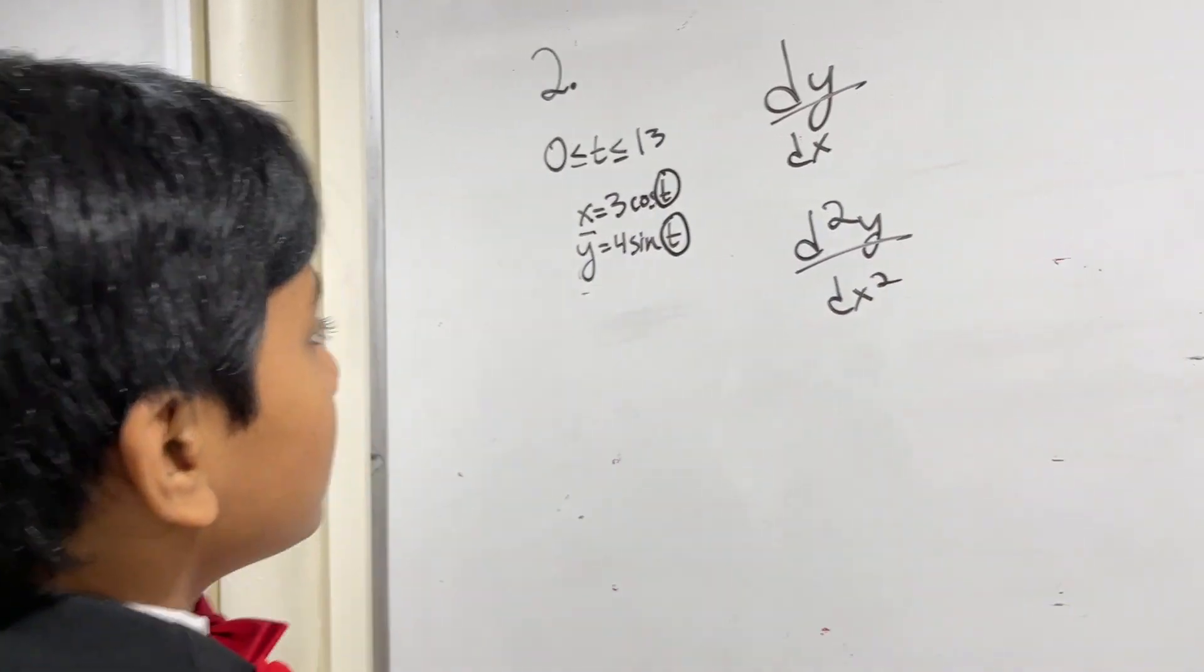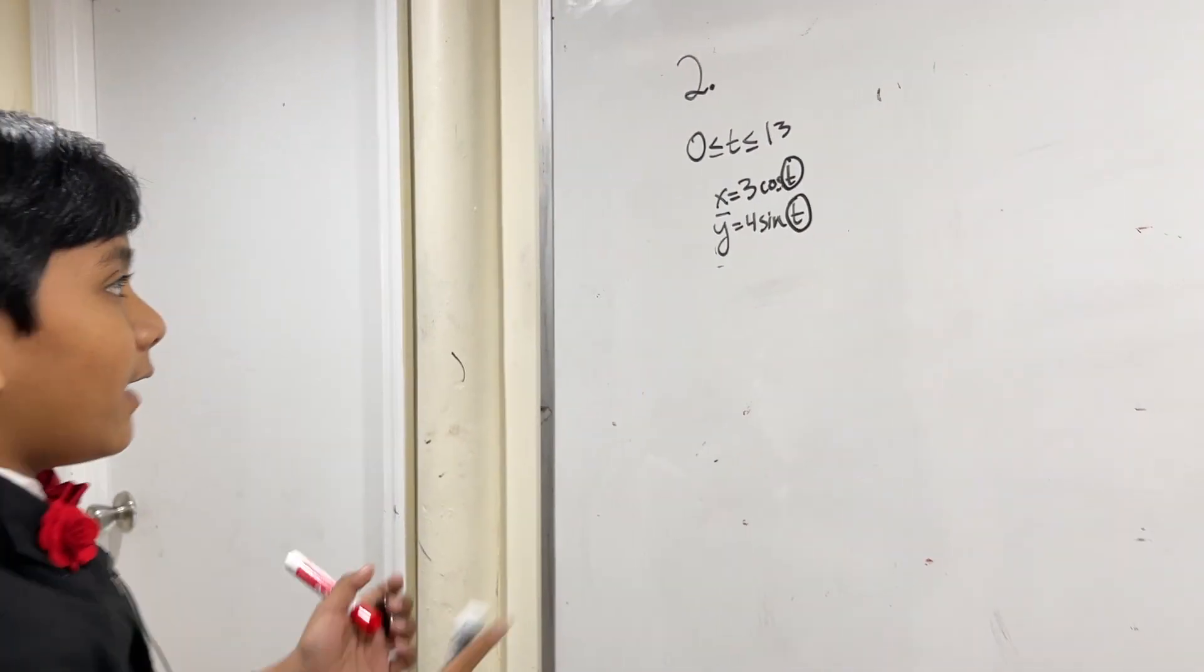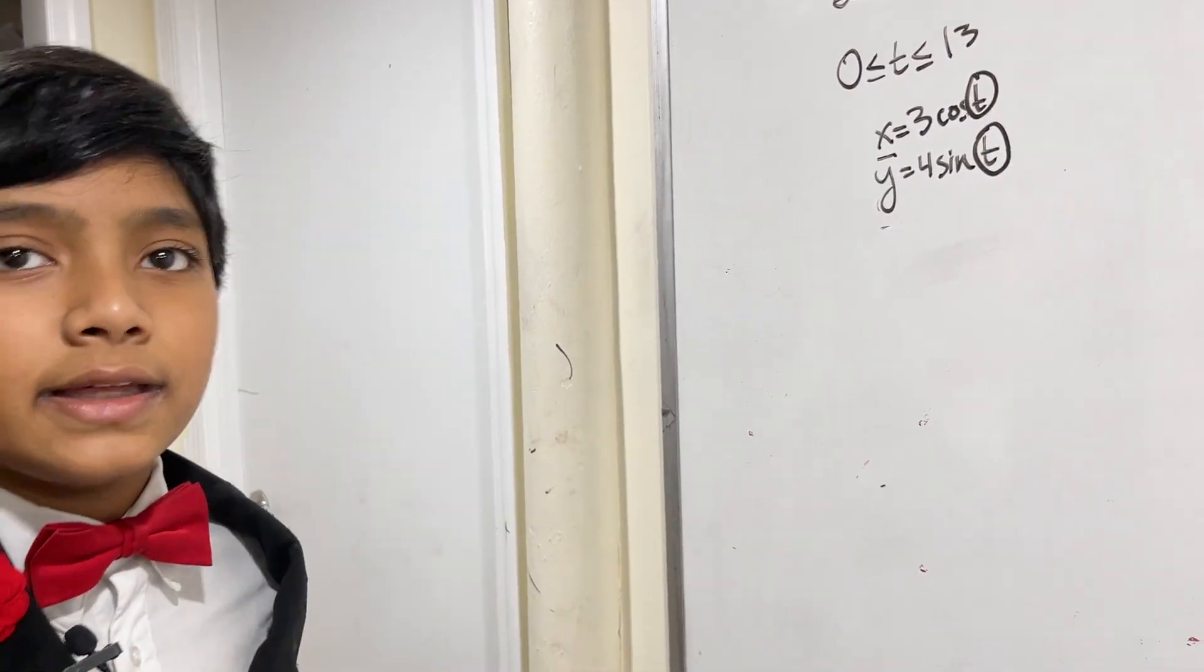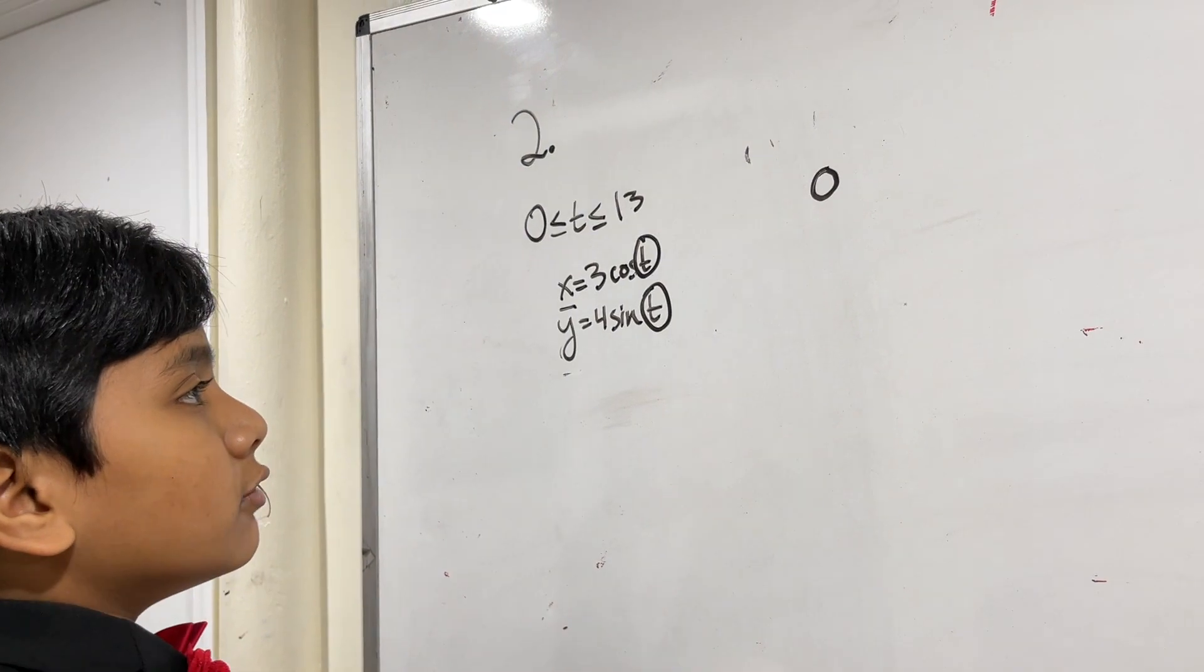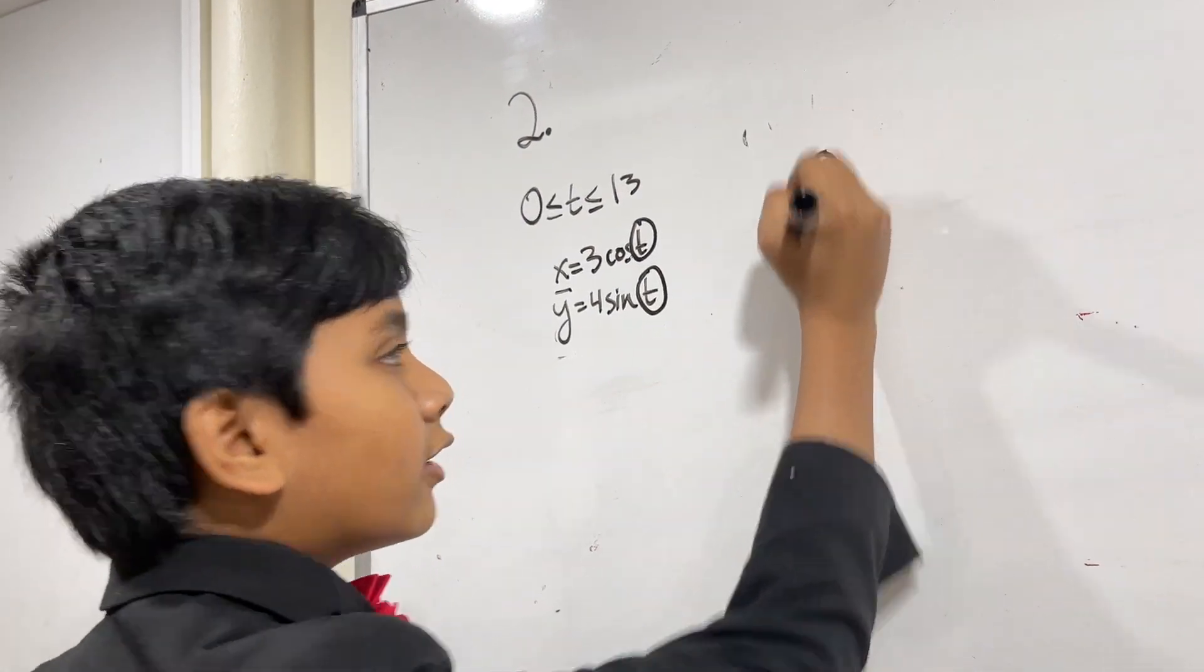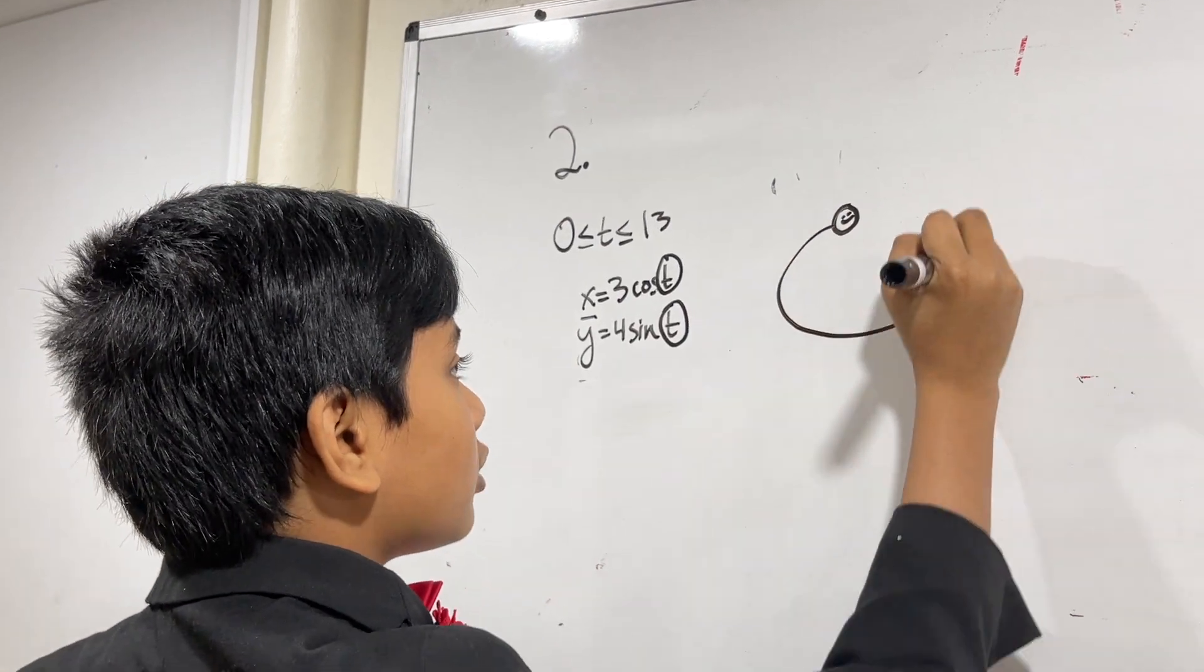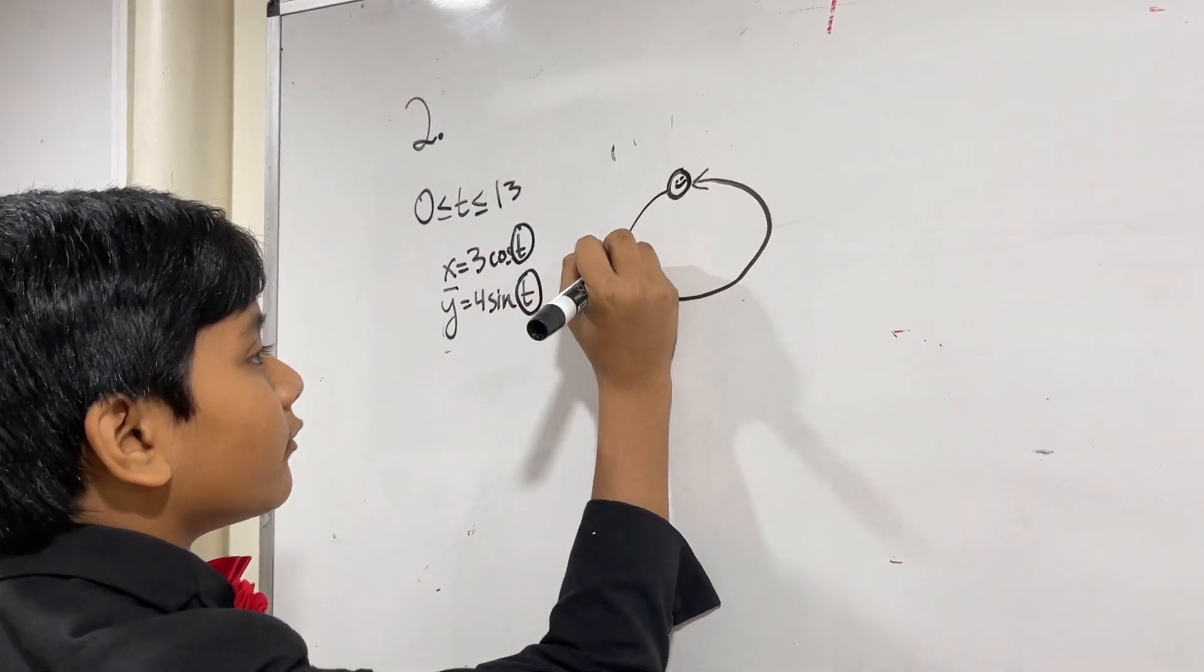What are we here to do today? We have 0 ≤ t ≤ 13. In that time interval, we have our particle buddy going in an elliptical curve defined by these two parametric functions.